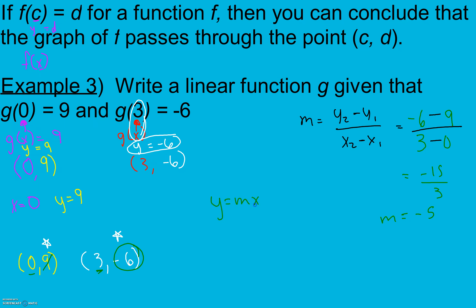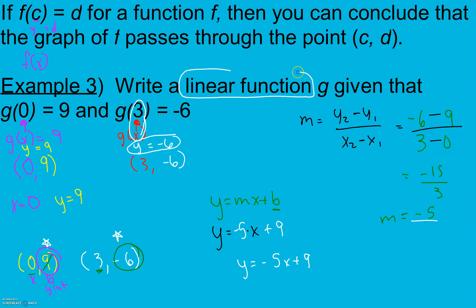For slope-intercept form, I need not only my slope but also my intercept. We actually already have our intercept — remember, anytime x is 0, our y value is our b value, or our y-intercept. So here my y-intercept is 9. My framework for slope-intercept form is y equals slope times x plus intercept. I know my slope is negative 5 and my intercept is positive 9, so y equals negative 5x plus 9. Since it's a linear function g, we rewrite it as g of x equals negative 5x plus 9.